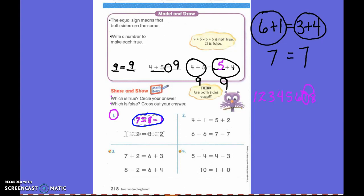Next, we need to find out if 1 plus 2 really does equal the same as 3 minus 2. 1 plus 2 equals 3. 3 minus 2 equals 1. Does 3 equal 1? No, it does not. So I am going to cross out that number sentence because it is not true.